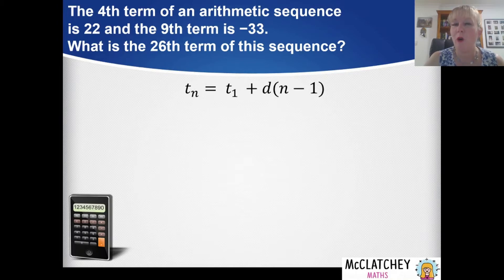So I've given you the general form of an arithmetic sequence on the screen here. This is part of your formula sheet if you're in Queensland so you don't need to memorize this. The nth term is equal to the first term plus the common difference d multiplied by the number of terms take away 1.